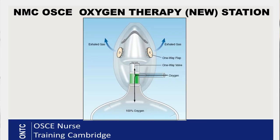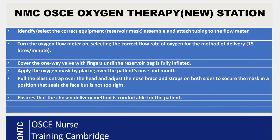The reservoir mask has a reservoir bag where oxygen collects before the patient inhales. You need to make sure it is fully inflated first. To inflate the bag, place your finger on the T-shaped valve on the inside of the mask — with the flow meter already running, the bag will start filling with oxygen. Make sure it is completely full and fully inflated before applying it to the patient.